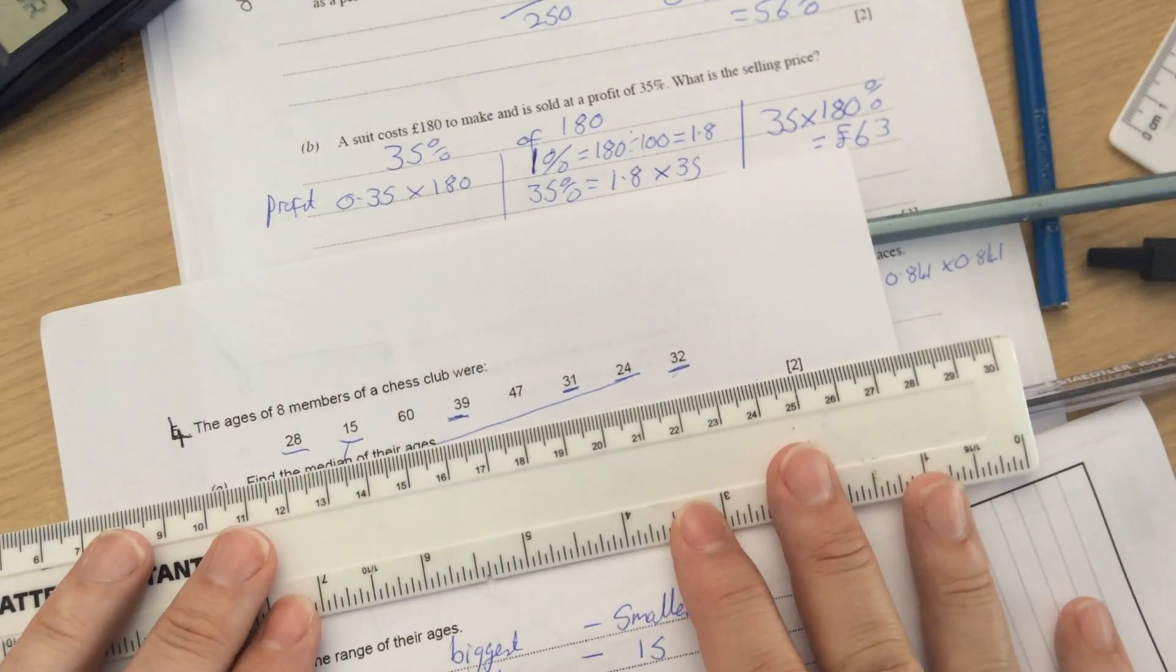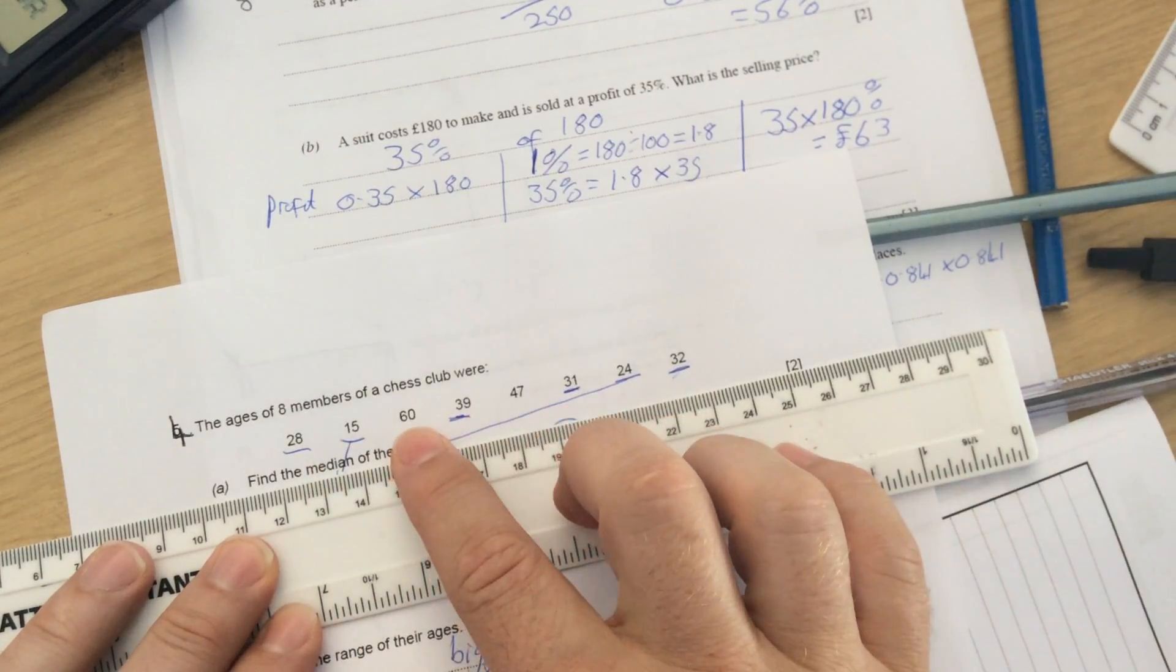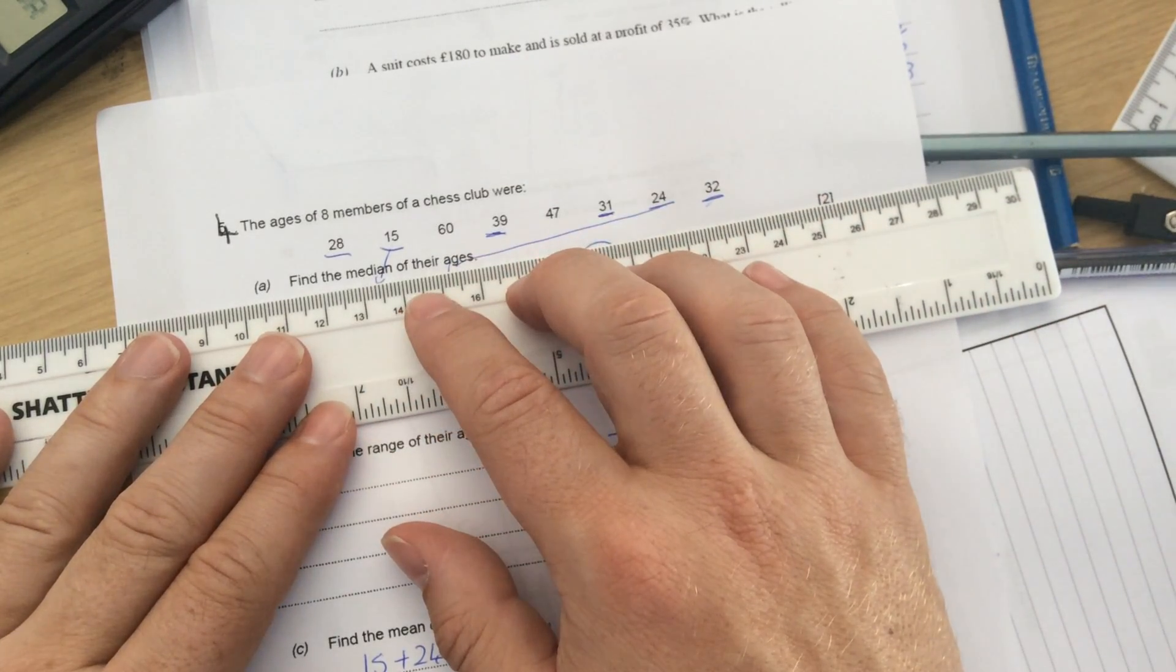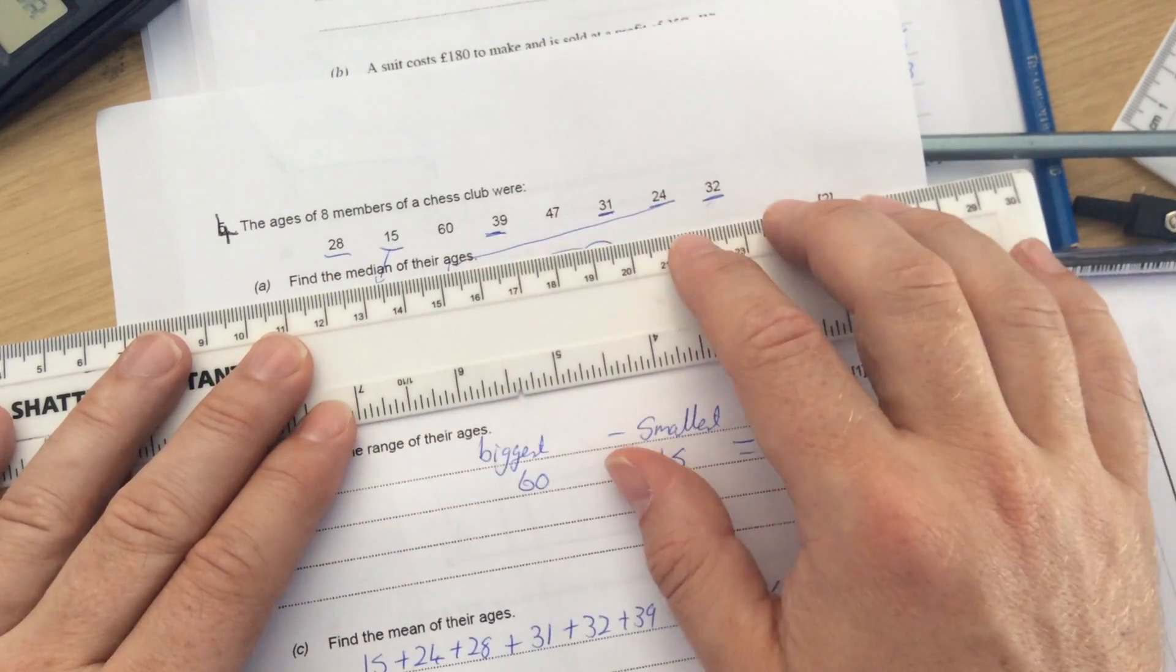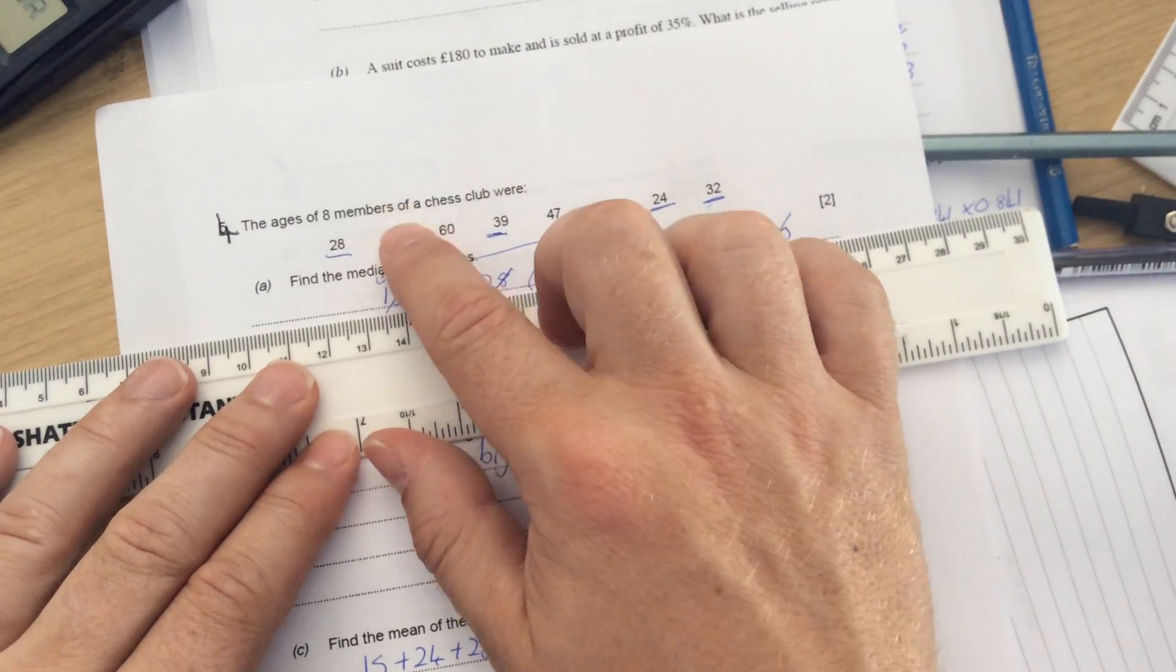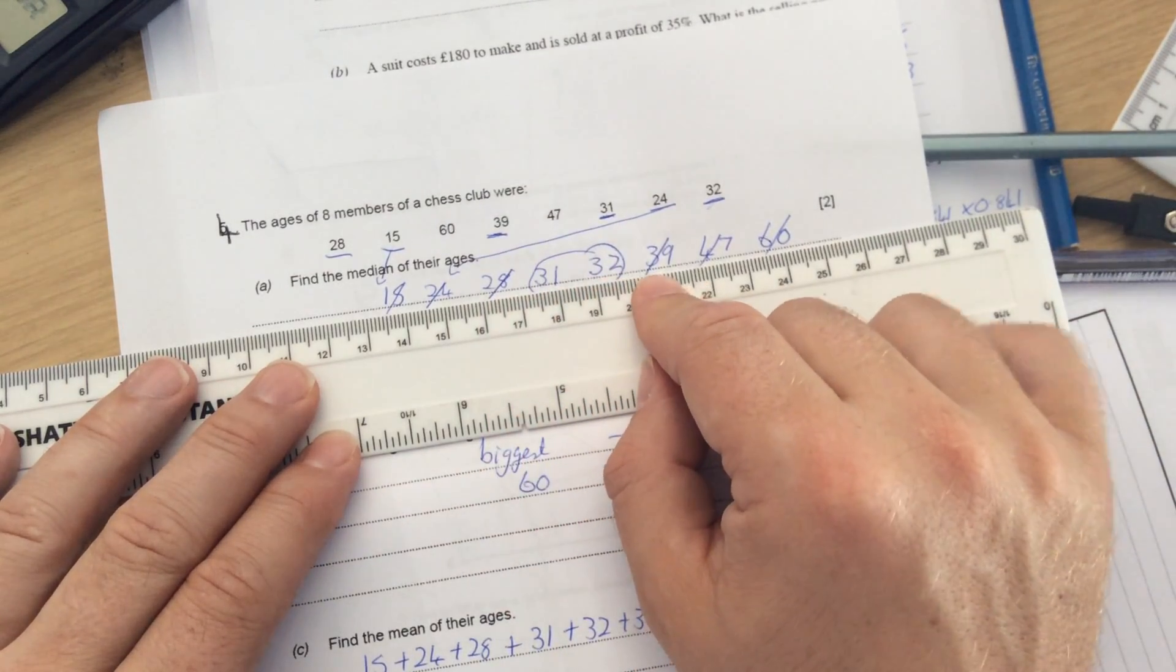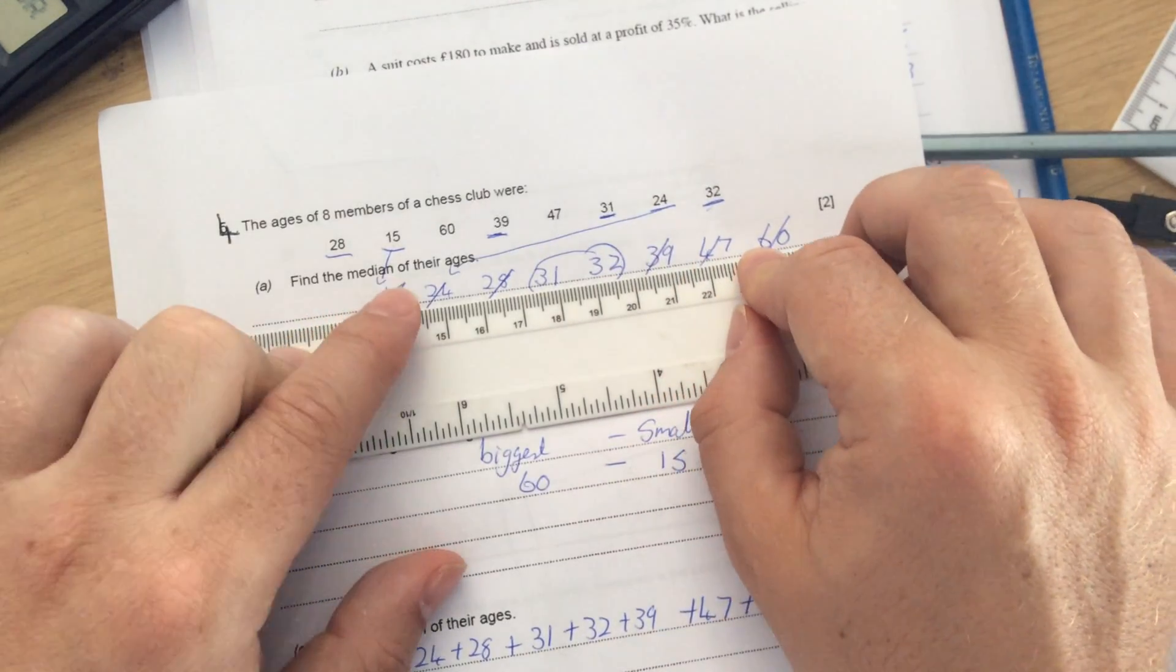Question 4: The ages of 8 members of a chess club were 28, 15, 60, 39, 47, 31, 24, and 32. Find the median. The median is the middle. So when you're working out the median, you've got to put them in order from smallest to biggest. So I looked at there, and my smallest number is 15. My next number was 24, then 28, then 31, then 32, then 39, then 47, then 60.